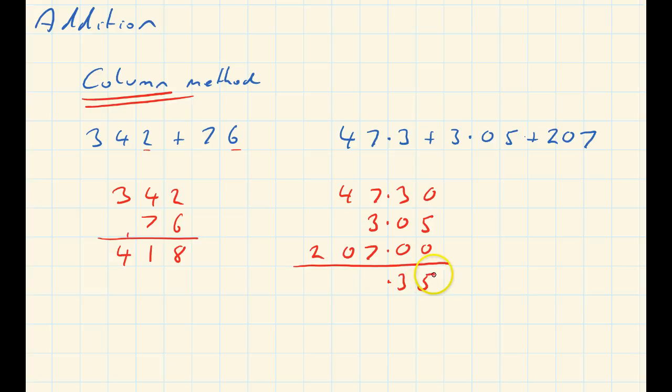7 and 3 is 10, and 7 makes 17, so put down a 7 and carry the 1. 4 and 1 is 5, and that's 2. Just check it looks about right: 207, 250 odd, 257.35. That looks good.